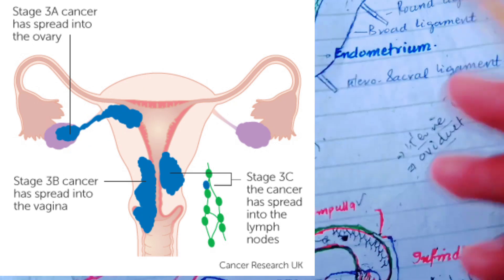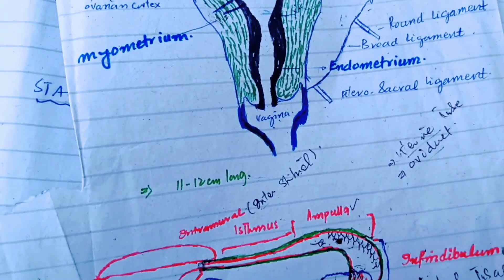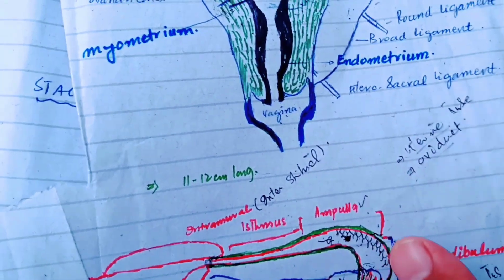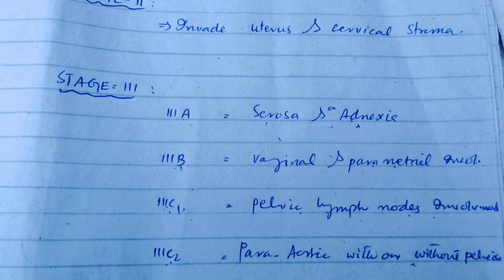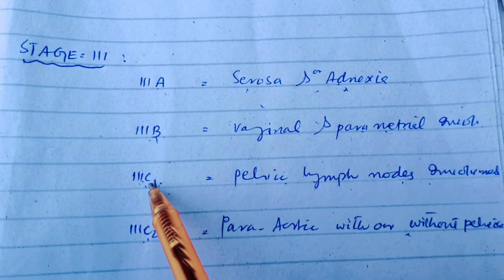When the parametrial structures are involved by the endometrial carcinoma, it will be classified as Stage 3b.